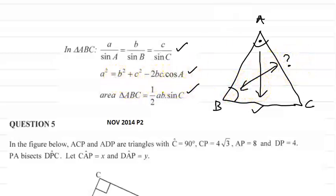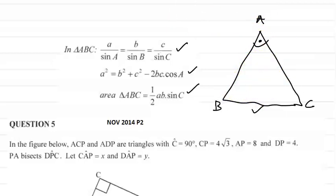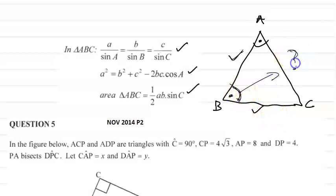For the cosine rule, I must be given two sides and an included angle. For example, if I'm given sides AB and BC, the included angle is angle B, and I can find the side opposite that included angle, which is AC. Similarly, to use the area rule, I must also be given two sides and an included angle.